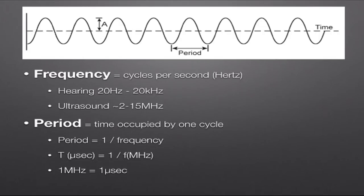The ultrasound period is the amount of time occupied by one cycle — one area of rarefaction and peak compression. We can determine the period, typically described in microseconds, as being one over the frequency in megahertz. So typically we're getting a period of approximately one microsecond or less.